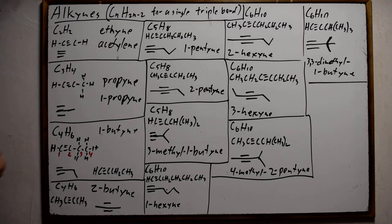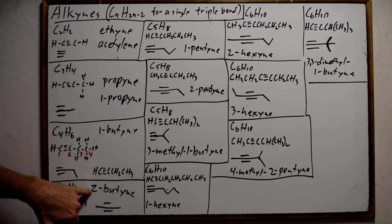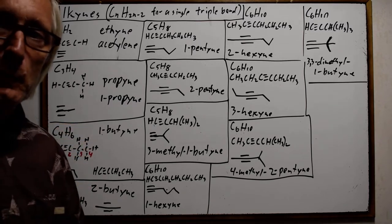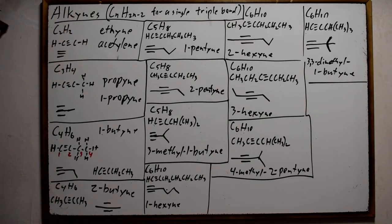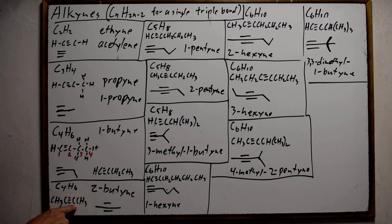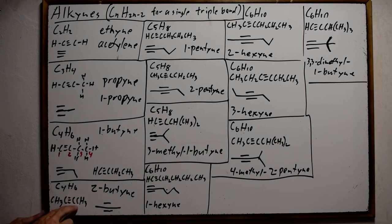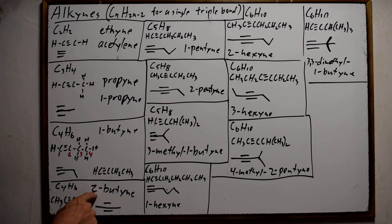Starting with butyne, we now have isomers based on where that triple bond is in the molecule. The triple bond can also be between the second and third carbons. We always number to give the triple bond the lowest number, so this would be 2-butyne.